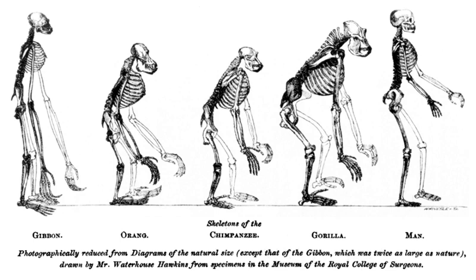The earliest evidence of life comes from biogenic carbon signatures and stromatolite fossils discovered in 3.7 billion-year-old metasedimentary rocks from western Greenland. In 2015, possible remains of biotic life were found in 4.1 billion-year-old rocks in western Australia. In March 2017, putative evidence of possibly the oldest forms of life on Earth was reported in fossilized microorganisms in hydrothermal vent precipitates in the Nouveau-Québec belt of Quebec, Canada, that may have lived as early as 4.28 billion years ago, not long after the oceans formed 4.4 billion years ago.